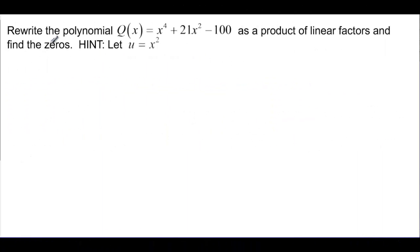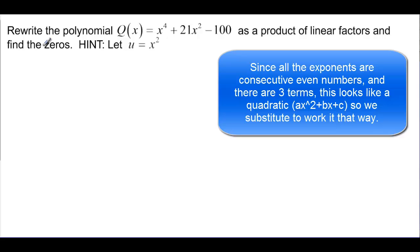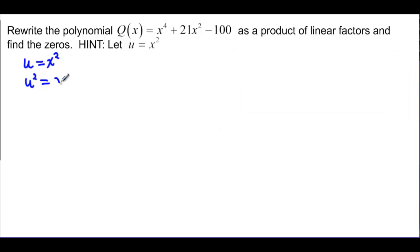Let's try it. Rewrite the polynomial Q(x) equals x to the fourth plus 21x squared minus 100 as a product of linear factors and find the zeros. And then it gives us this hint. It says let u equal x squared. U is equal to x squared, and that means that if I have u squared, that's equal to x squared squared or x to the fourth. Instead of x to the fourth, we can say that that's really u squared. And then instead of x squared, we can say that that's u. And then we have our minus 100.